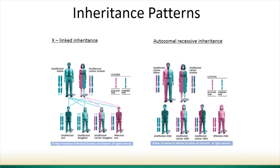For X-linked inheritance — the most common form of CGD — the father is typically unaffected and the mother is typically a carrier, carrying the abnormal gene. The mother's sons have a 50% chance of being affected and a 50% chance of not being affected. The daughters of that mother and father also have a 50% chance of being a carrier.